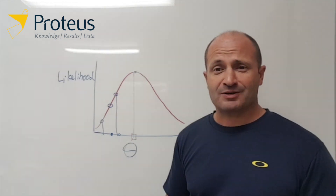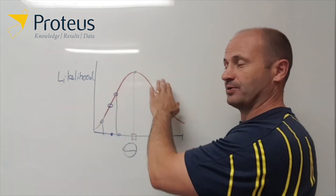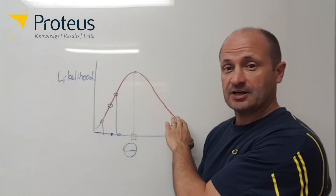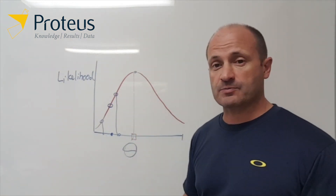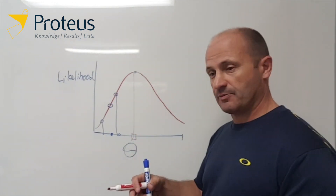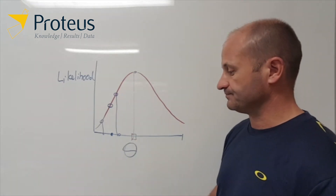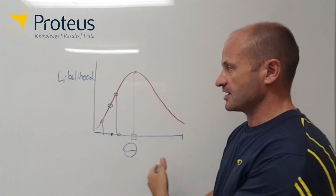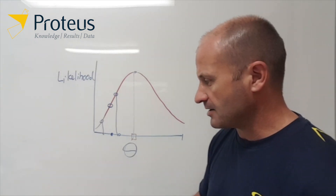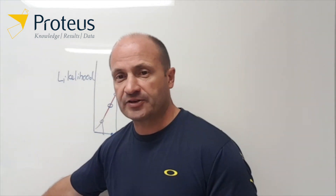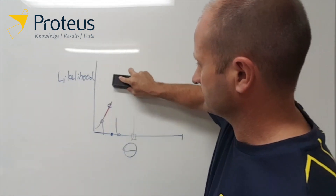If you've got a nice problem you might just have one peak, whether you have two, three, four, or five parameters. In that case things tend to work pretty well.